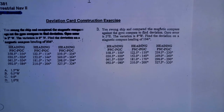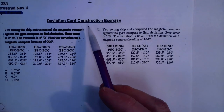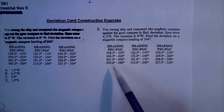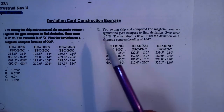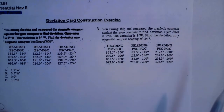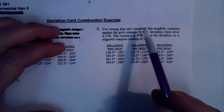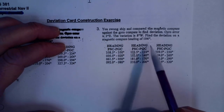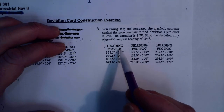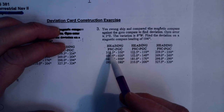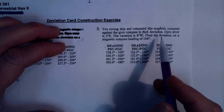In this video I'm going to show you how you can solve these problems using data from swinging ship. You can call these deviation card construction exercises. You're given a question and also given data that came from swinging ship — your gyro compass headings and simultaneous magnetic compass headings.